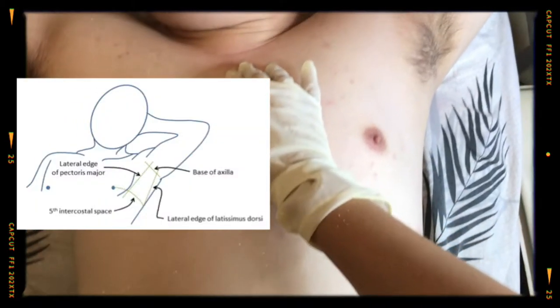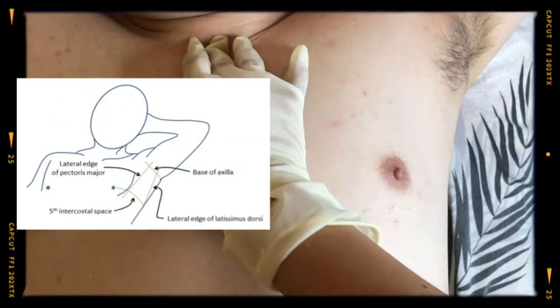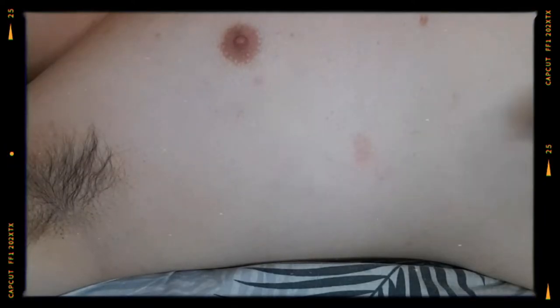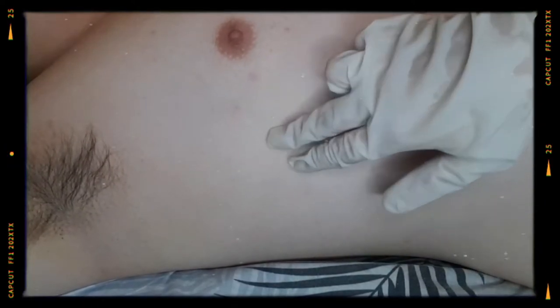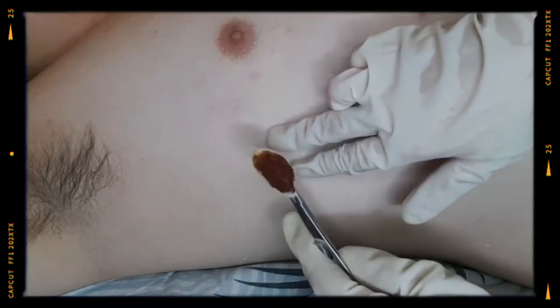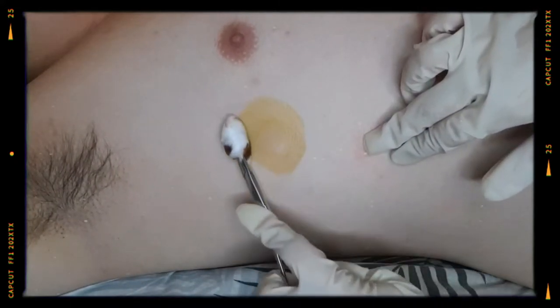For the procedure, if possible, have the patient assume a semi-upright position with the arm placed above the head. Prep the skin over a wide area of the chest wall with povidone iodine, starting from an inward to an outward pattern.